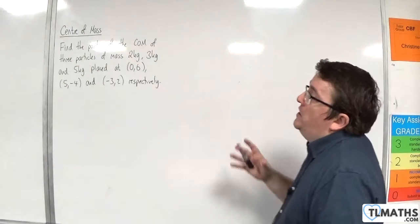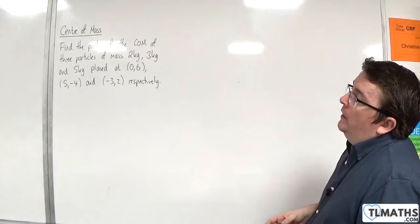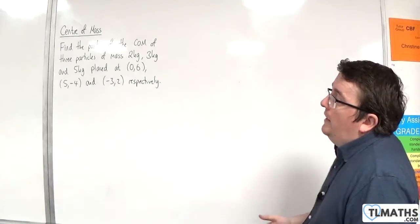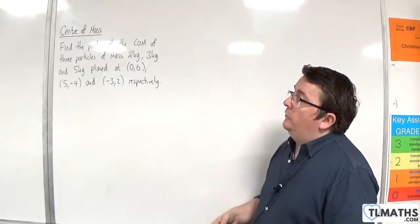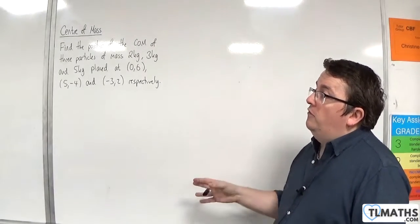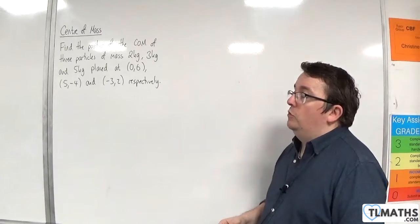So in this video, we've got to find the position of the centre of mass of three particles of mass 2 kilos, 3 kilos and 5 kilos, placed at 0, 6, 5 minus 4, and minus 3, 2, respectively.